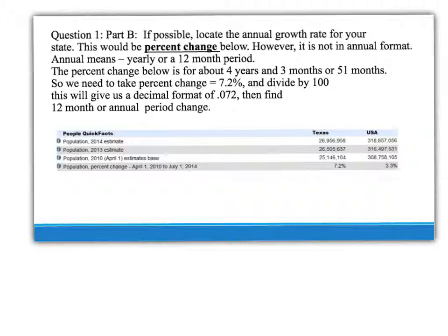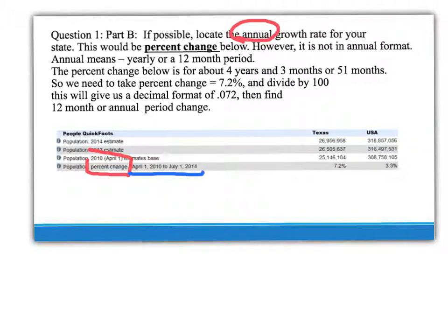Part B of this question was for you to locate the annual growth rate for your state. In our chart, that's percent change. Note that our question asked us for annual growth rate. The percent change provided by this census website is actually for four years and three months. Annual means one year or twelve months.